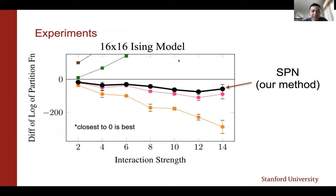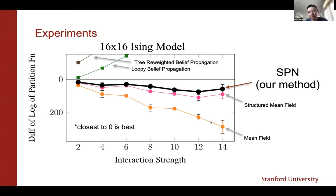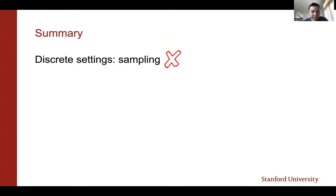For experiments, here is a 16×16 Ising model — in our paper we also tried 32×32 but couldn't compute ground truth there. We can compute the ground truth via graphical model libraries and see how close our lower bound comes. Our method outperforms mean field, structured mean field, and also loopy belief propagation, giving the best estimate of the log partition function.